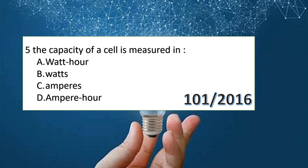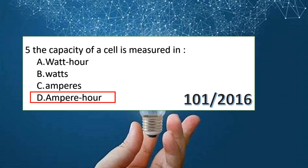The capacity of a battery is measured in which unit? The options include Ampere. The answer is option D: Ampere-hours.